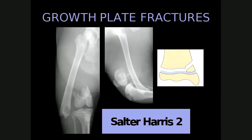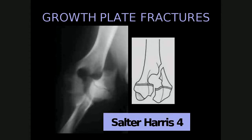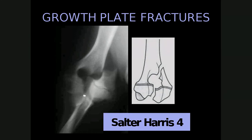A Salter-Harris type 2 fracture involves the lateral aspect of the distal femoral physis and extends proximally through the metaphysis. A Salter-Harris type 3 fracture affects the medial aspect of the proximal tibial physis, with the fracture extending vertically through the epiphysis. A Salter-Harris type 4 fracture, which is quite common in the elbow, extends through the intercondylar area and out through the medial humeral cortex. Note that Salter-Harris types 3 and 4 are intra-articular fractures, which also affects prognosis.